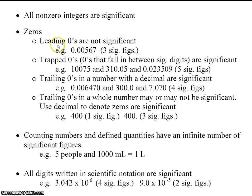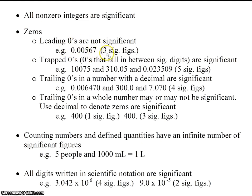We have three types of zeros: leading zeros, trapped zeros, and trailing zeros. Let's look at leading zeros first. Leading zeros are not significant. As you might have guessed, leading zeros are zeros that lead, or come out in front of a number. So this number here has three sig figs — they're the 5, the 6, and the 7. These leading zeros are not significant.